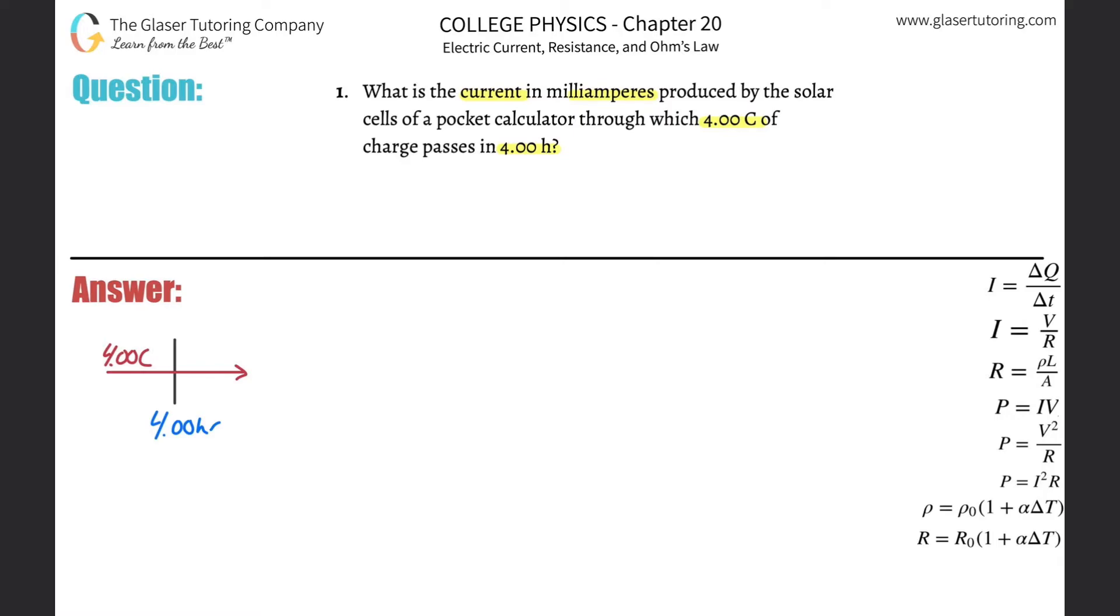Now current in physics here is going to be measured in coulombs per second. Coulomb per second, and that is known as an ampere, okay? So the first thing is I want to solve for current in amperes.